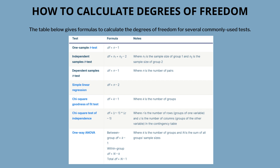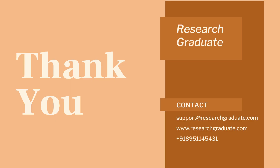Test-specific formulas: it can be difficult to figure out the number of restrictions, so it's often easier to use test-specific formulas to calculate the degrees of freedom of a test statistic. The table below gives formulas to calculate the degrees of freedom for several commonly used tests.